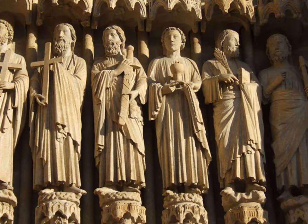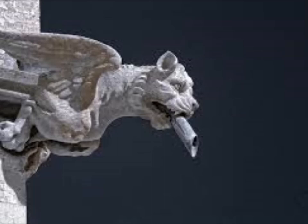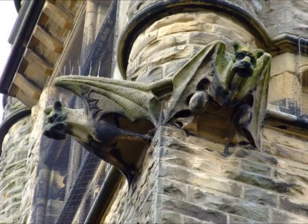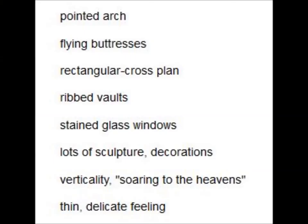Strong superstitious beliefs are behind the sculptures of gargoyles. Gargoyles were meant to scare evil spirits away and remind people that evil was all around them. Builders also had them designed to function as water spouts to carry water away from the building. The gargoyle ornament sticks out from the corner of a building, looking like a skinny dragon, with an open mouth where water would pour.